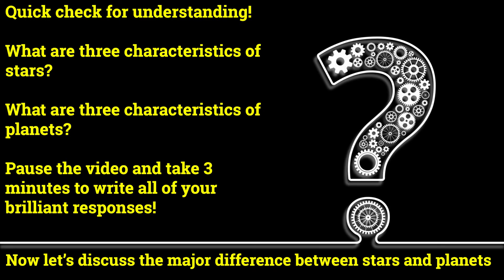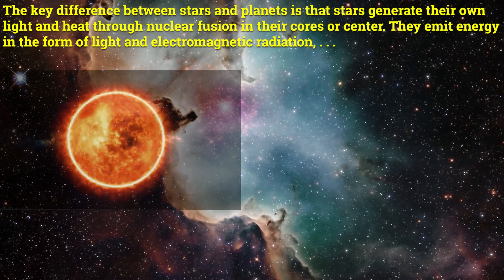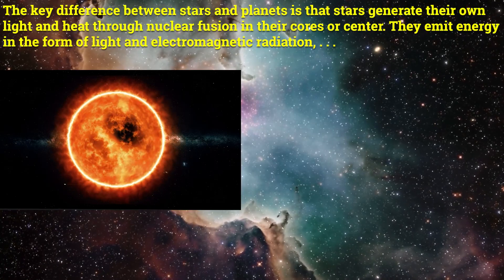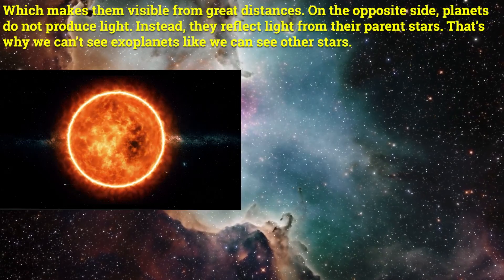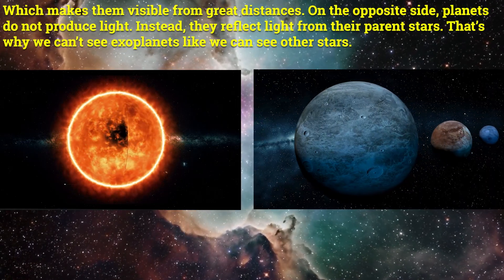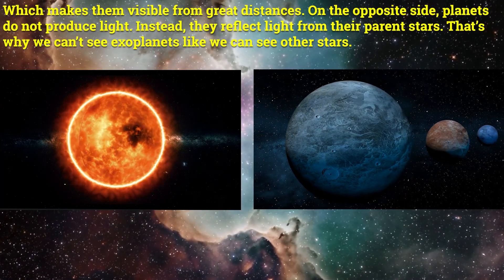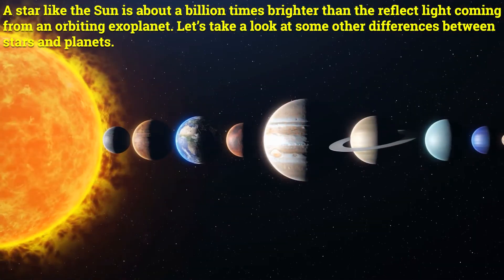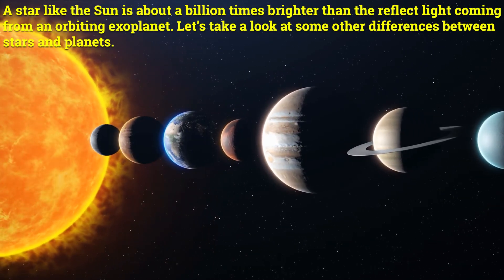Now let's discuss the major difference between stars and planets. The key difference is that stars generate their own light and heat through nuclear fusion in their cores. They emit energy in the form of light and electromagnetic radiation, which makes them visible from great distances. On the opposite side, planets do not produce light — instead they reflect light from their parent stars. That's why we can't see exoplanets like we can see other stars. A star like the Sun is about a billion times brighter than the reflected light coming from an orbiting exoplanet.